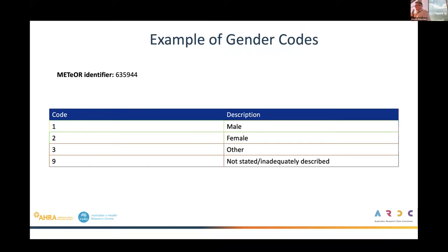We even have very simple examples like the METEOR codes for sex, and yet probably every single system I encounter has a different set of abbreviations for sex. So where can I go to find that out, or do I need to reinvent the wheel every time?